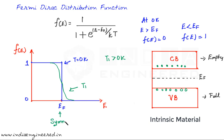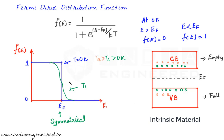If temperature increases further to T2, where T2 > T1 > 0 Kelvin, there should be more electrons in the conduction band and more empty states in the valence band. The probability of finding an electron in the conduction band further increases, while that in the valence band decreases. This gives us a family of curves showing how the distribution broadens with increasing temperature.